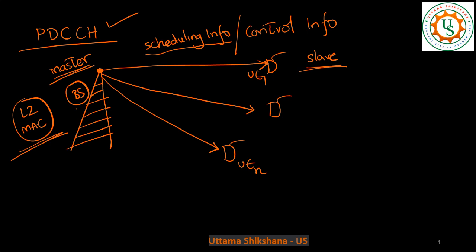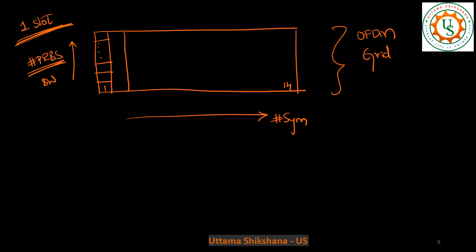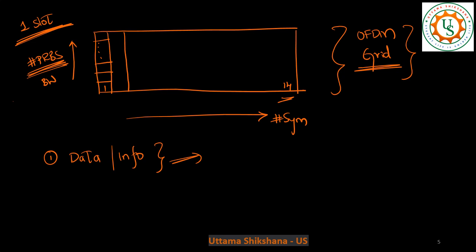This data transfer between base station and UE happens slot by slot. One slot consists of 14 symbols on the time axis, and on the y-axis we have the number of PRBs, which depends on the bandwidth of the system. This is the OFDM grid. For every slot, PDCCH information should be sent from the base station to the UE. The base station will allocate certain resources in this OFDM grid — maybe 12 symbols and a number of PRBs — for the data.